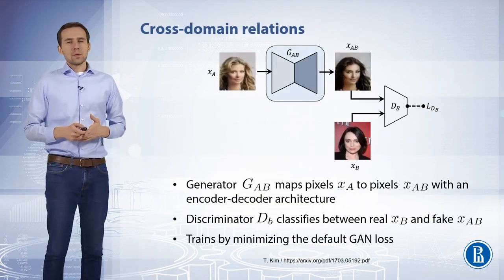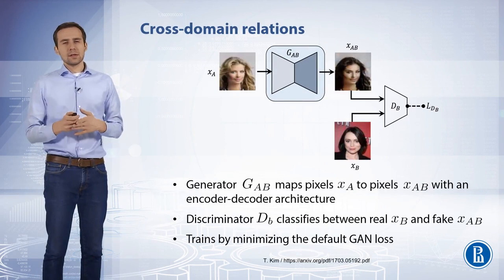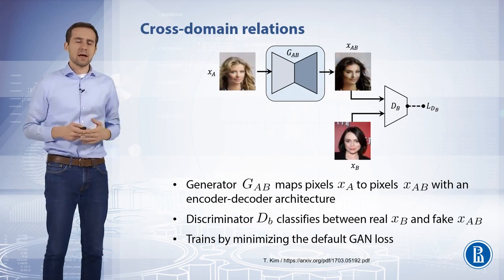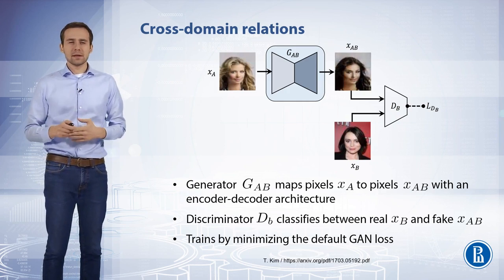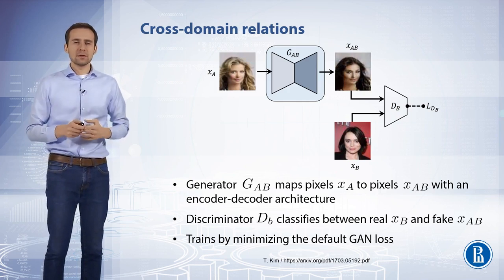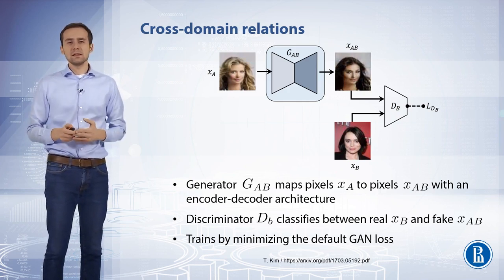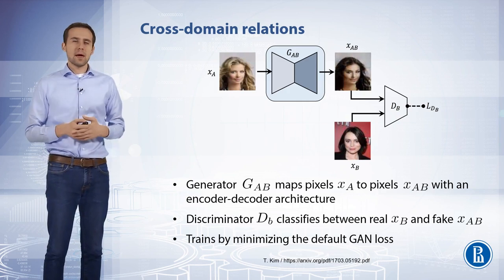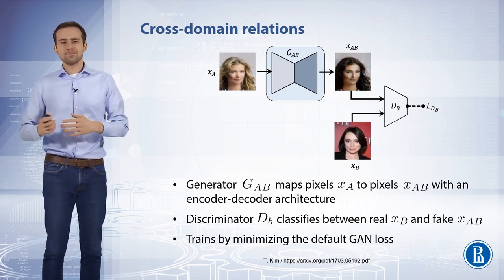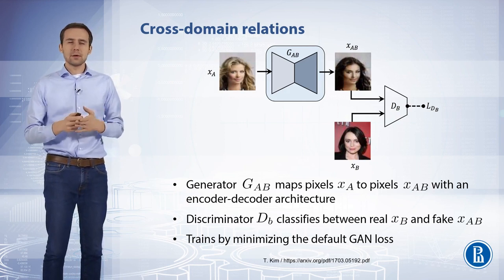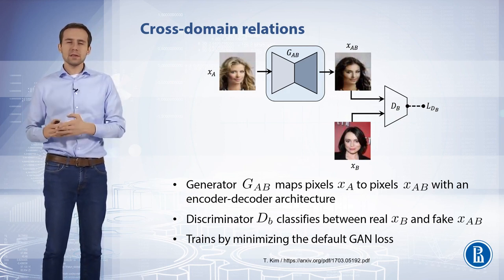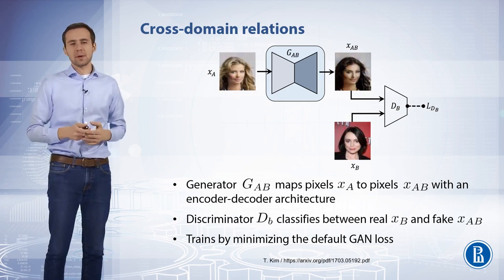In this video we're going to learn how to learn image relations with generative adversarial networks. Recall that a generative adversarial network, such as a DCGAN, may learn a mapping from a latent space to image pixels. Analogously, it may be trained to learn a mapping from image pixels in one domain to image pixels in another domain.